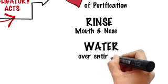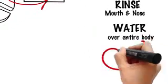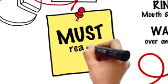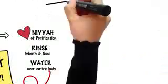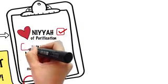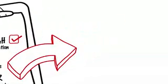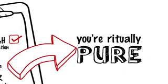And third, letting water run over your entire body at least once — make sure it reaches every part, even your scalp under thick hair. If you manage to do this much, then you have purified yourself from the major ritual impurity.